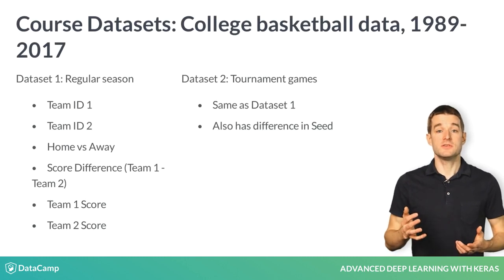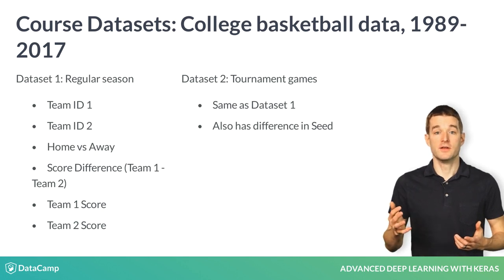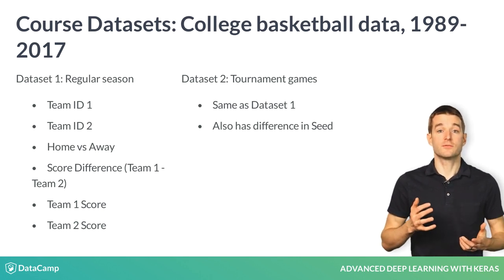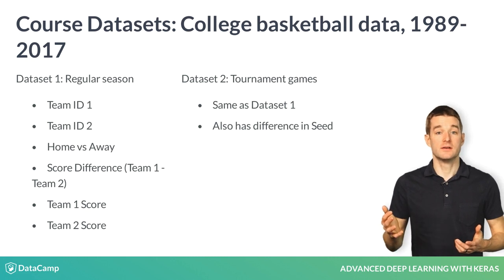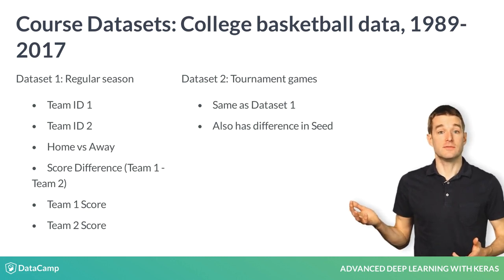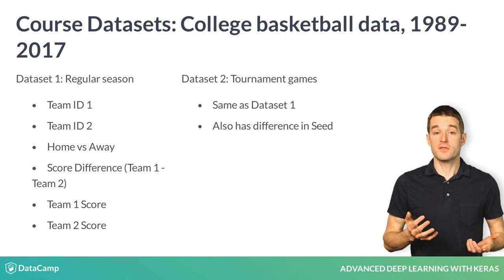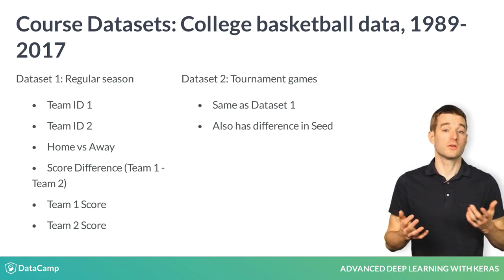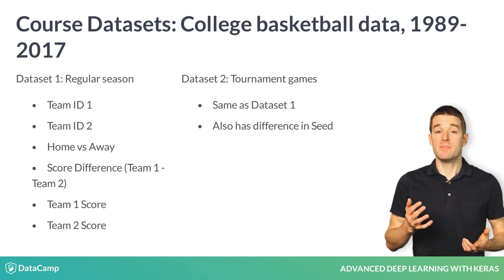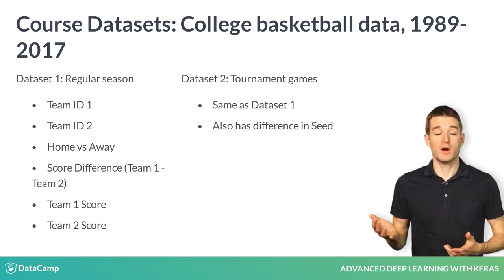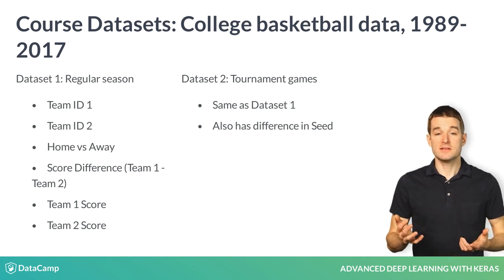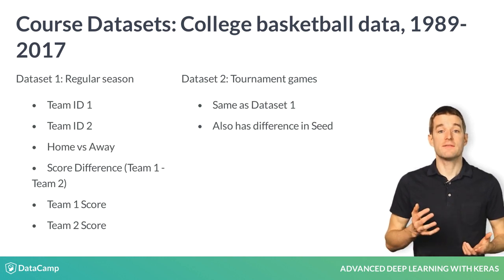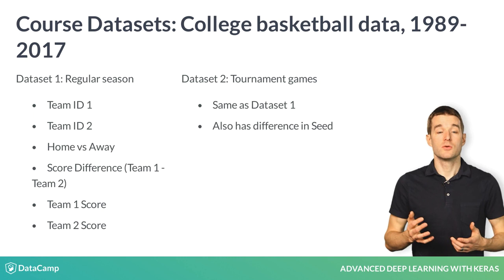You will be using two datasets of college basketball games from American colleges. The first dataset is from the regular season and has the following data: the IDs of the two teams that played, whether the first team was home or away, whether the first team won or lost the game, and by how many points the first team won or lost. For the tournament dataset, you also have the tournament seed, which is a pre-tournament ranking for each team.